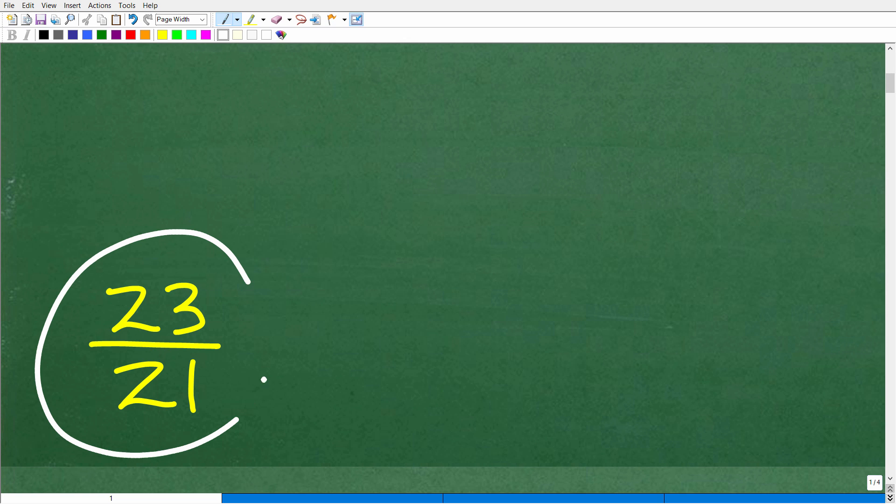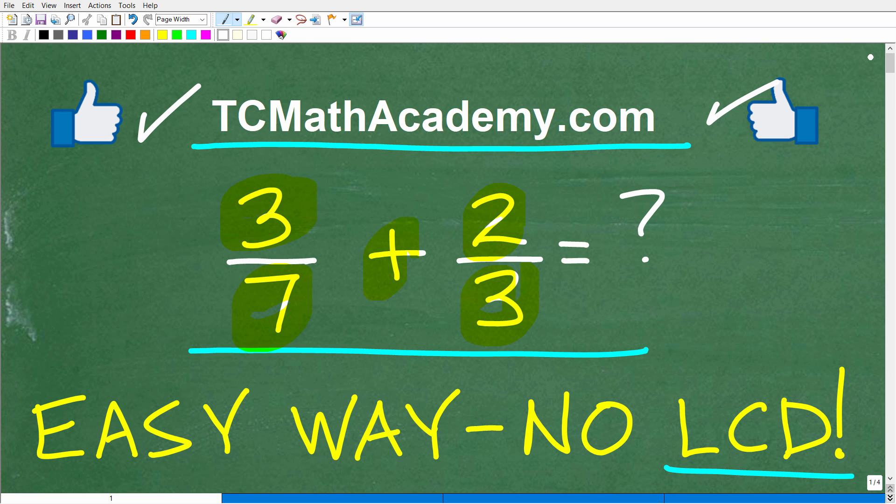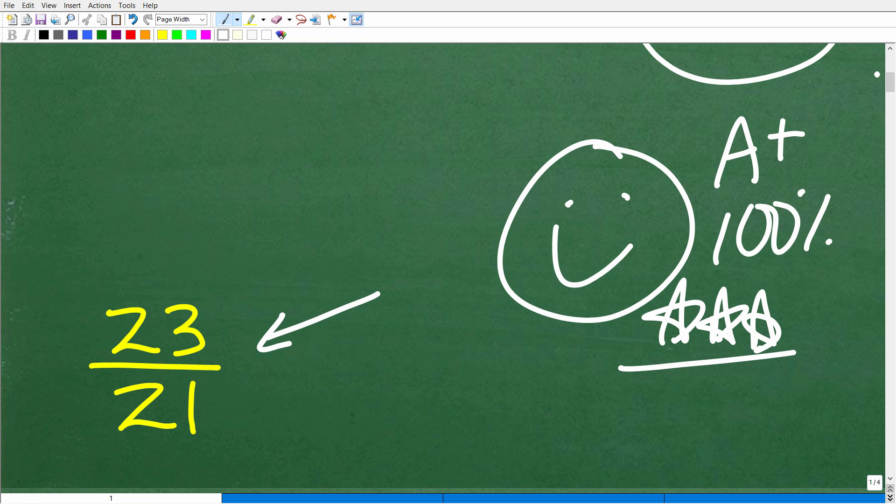So 3 over 7 plus 2/3, really basic stuff. Hopefully you have the right answer. The correct answer is 23 over 21. This fraction is what we call an improper fraction because the numerator is greater than the denominator. I'm going to assume that most of you actually found the LCD, which is the lowest common denominator to add these fractions.